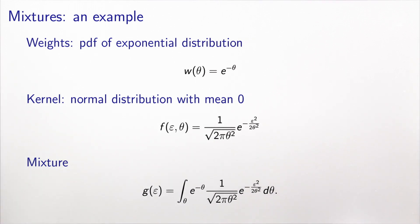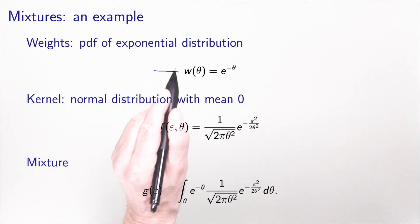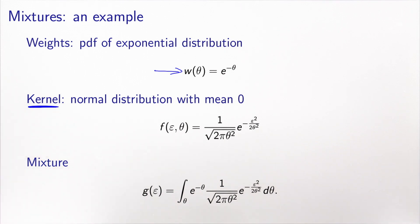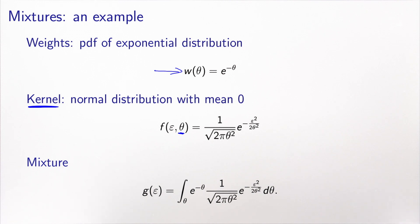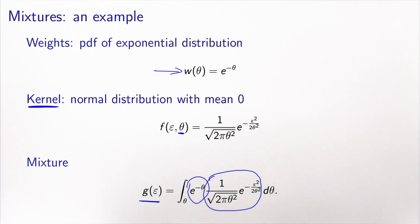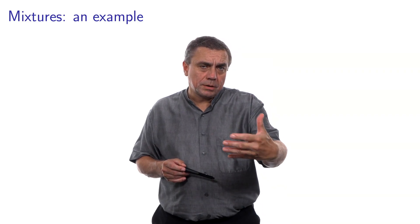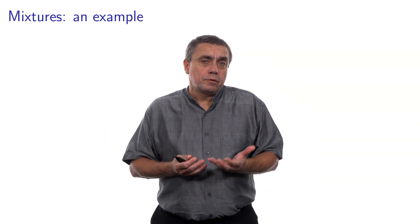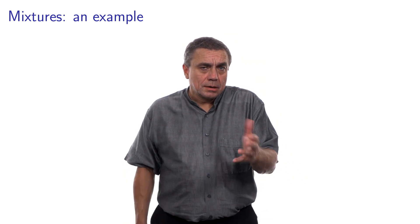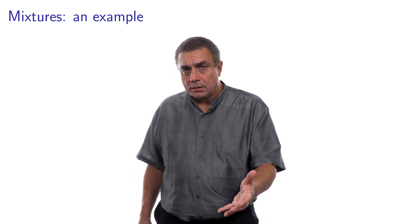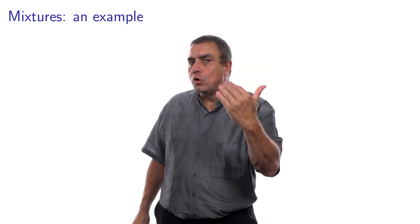Let's take a concrete example of a continuous mixture. I need to define weights, and here I will use the pdf of an exponential distribution: w of theta equals e to the minus theta. The kernel, as in the previous example, is a normal distribution with mean zero, and theta is the standard deviation. So g of epsilon is the integral over all possible values of theta of the weight w of theta times the pdf of the kernel. What we realize is that these mixtures involve an integral, and in most practical cases this integral has no closed form — you cannot find an analytical solution. This is the price to pay for the additional complexity we gain.